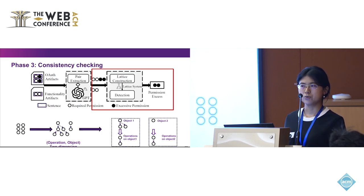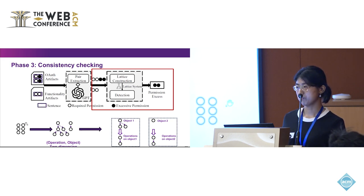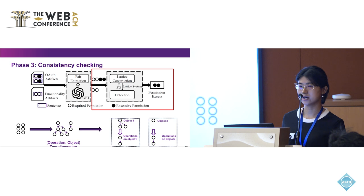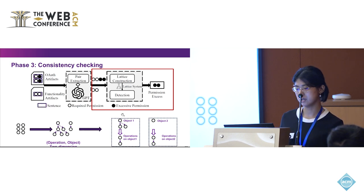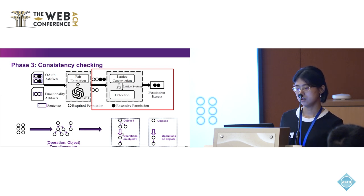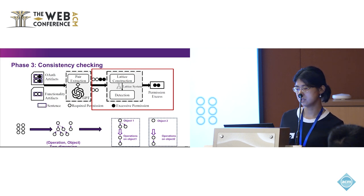After extracting the unified representation, we construct the latent system to preserve the permission hierarchy. Since operation and object form a two-dimensional pair, we construct the hierarchy step by step: first at the object level, then for all operations on each object. This allows us to build the latent system for these two-dimensional operation-object pairs.